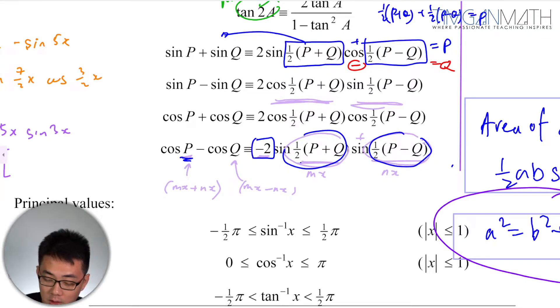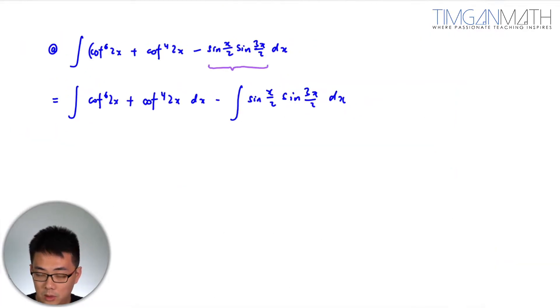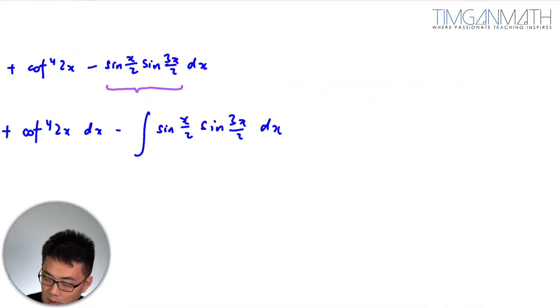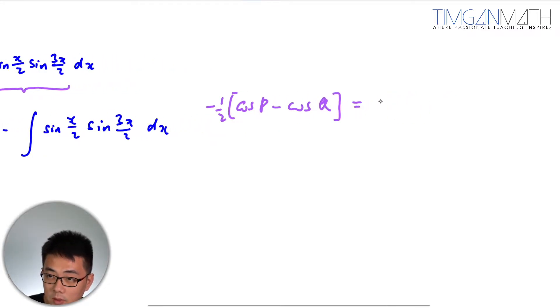So we're gonna do that quickly. So this case here I know that cosine p minus cosine q is minus half. I get back at this whole thing here equals to sine half p plus q, sine half p minus q.